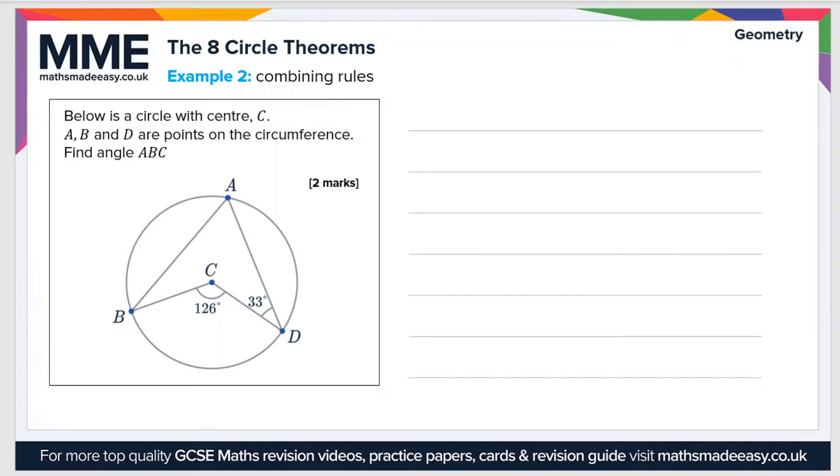So moving on to example two now. Below is a circle with center C. A, B, and D are points on the circumference. Find angle ABC. So ABC is this angle here, we'll call it x, and then we're going to need to use a few rules here.